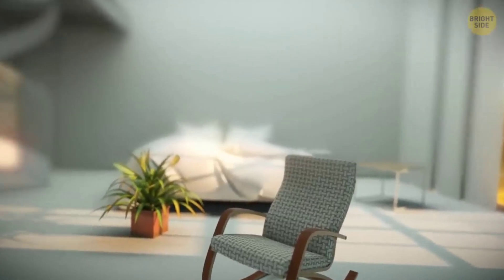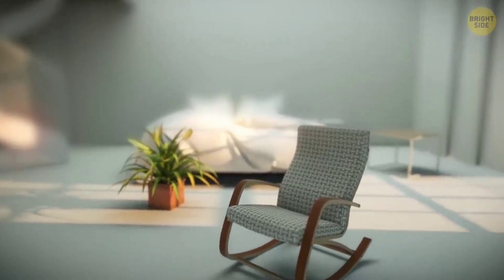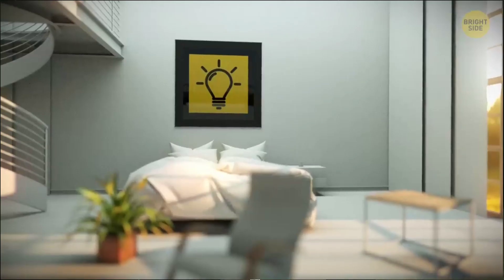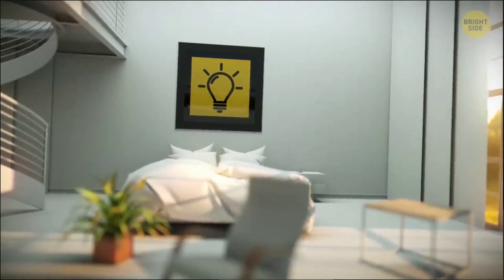If you're nearsighted, objects close to you will be in focus while things further away will be blurry. But if you're farsighted, it's objects further away that will be in focus while the objects close to you will be blurry.